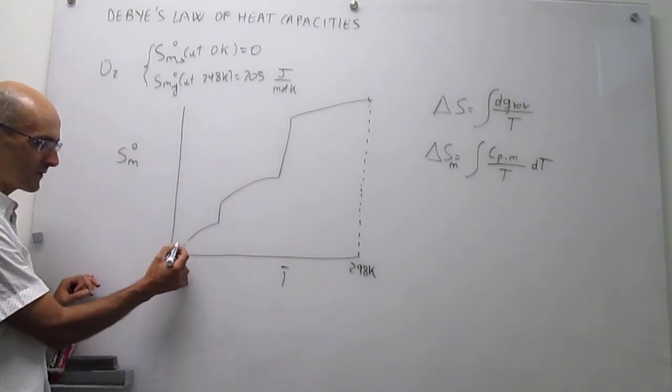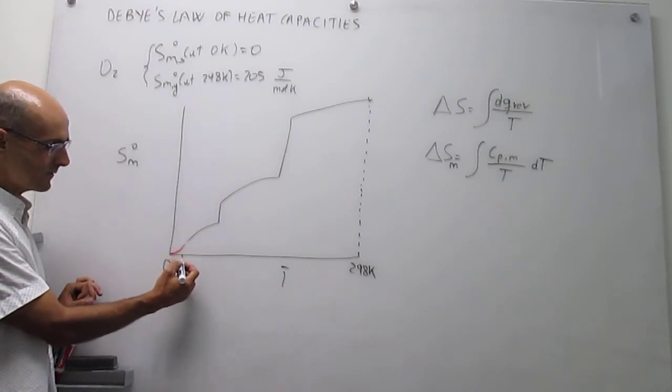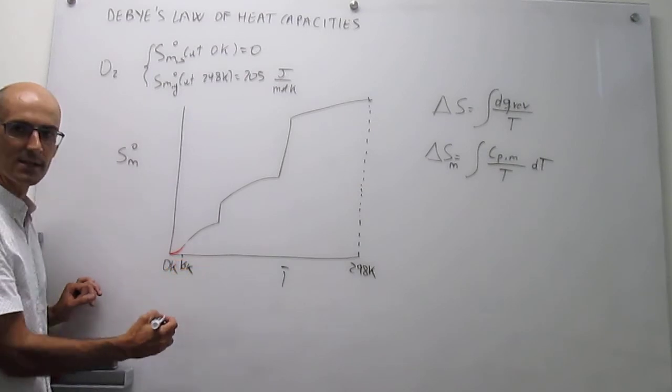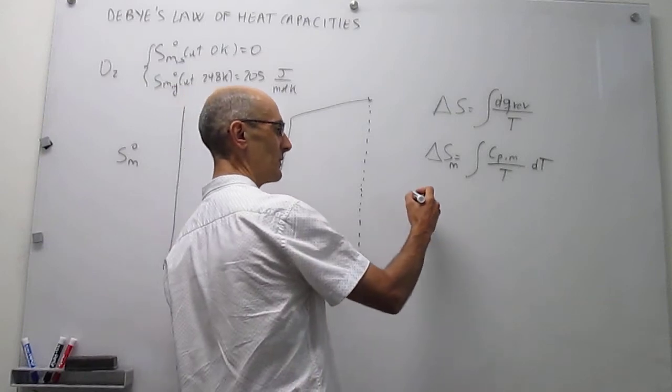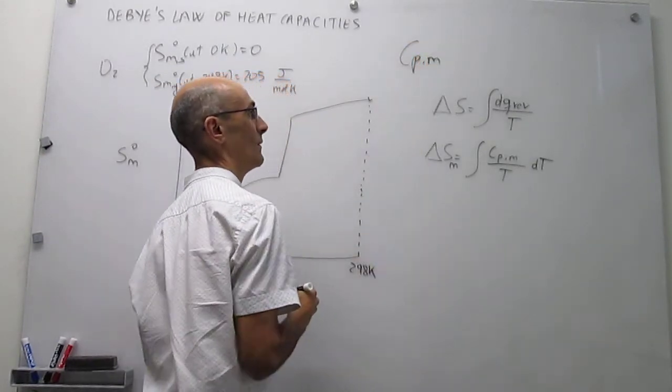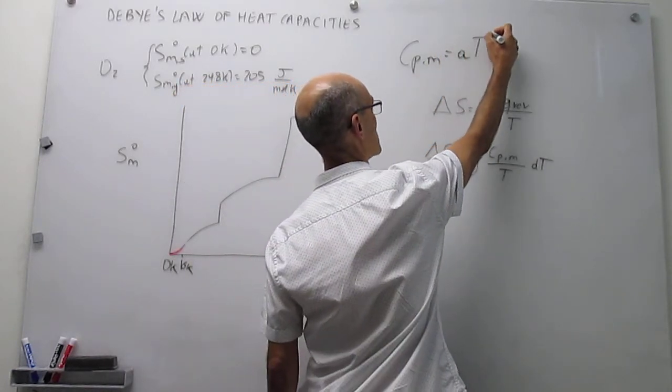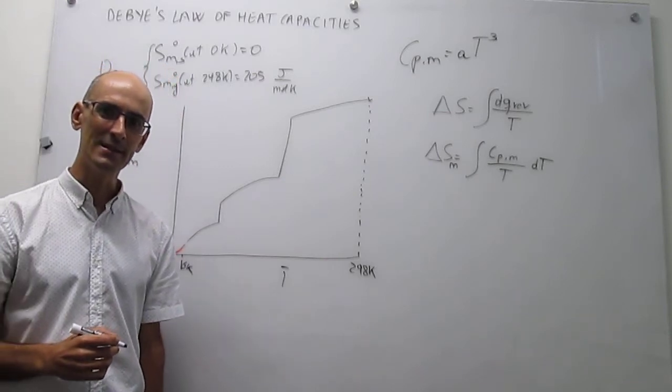So we're talking about this range where you can see in the video I retrace. That typically is between 0 Kelvin and maybe 16 Kelvin or so. That's the range of validity of this law. But the law is very simple. It just says that the molar heat capacity at constant pressure is simply A T cubed. So you have a cubic dependence of the heat capacity on temperature.